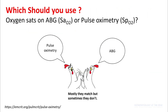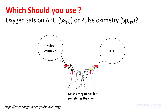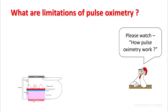You get SaO2 from your ABG and pulse oximetry, and sometimes these don't match — there's always a discussion about which one is more accurate. So let's delve into this for a bit. Please watch my previous lecture on how pulse oximetry works for more details.